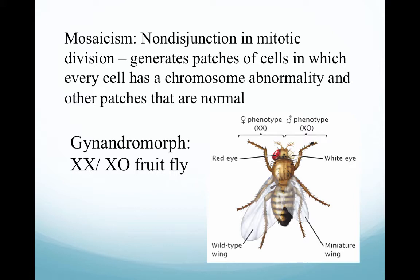This individual has at least one X chromosome, if not two. So because we have non-disjunction creating these patches of cells that have abnormalities and normalities, we can see that this fly ends up with one normal red eye, one abnormal white eye, one normal wild-type wing, and then an abnormal miniature wing. So we get just patches of abnormalities happening with this type of aneuploidy.